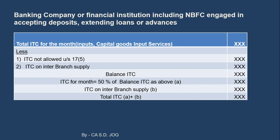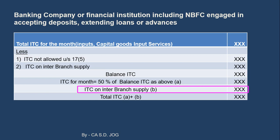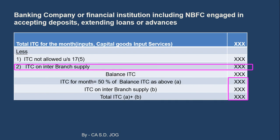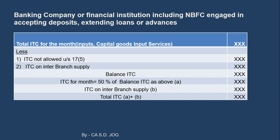ITC on inter-branch supplies is 100% allowed under this method. So we add this back for eligible input tax credit. Call it B — ITC on inter-branch supply. Total ITC will be A plus B: A is the 50% amount and B is inter-branch supply ITC. That is why we deducted inter-branch ITC in the upper calculation — because it is eligible for 100%, so we removed it, and only the balance ITC is considered for the 50% calculation.